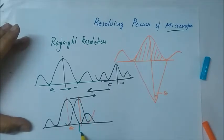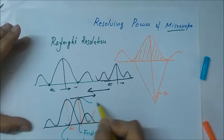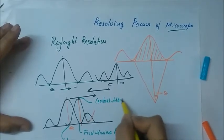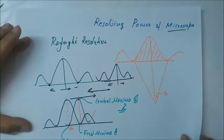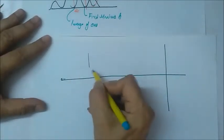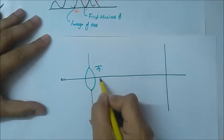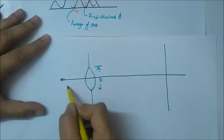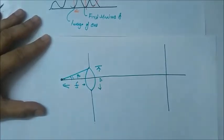This is the first minima of one, if we take this as image of one, and this is image of two with its central maxima. This is the resolution criteria. Let us see how we derive the resolution of our microscope. Let us take a situation where there is a lens of diameter D, object is at focal length, and let this angle be beta.